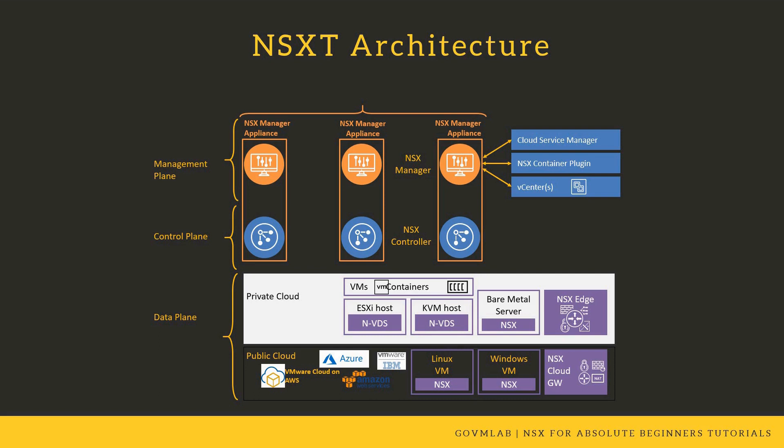The important difference between NSX v and NSX-T is that in NSX-T, the controller does not get deployed as standalone individual VMs separate from NSX manager. In NSX v, NSX manager is deployed as a standalone VM and NSX controllers as three separate virtual appliances — four VMs total for management and control plane. But in NSX-T, NSX manager and NSX controller are combined into a single virtual appliance called the unified appliance.